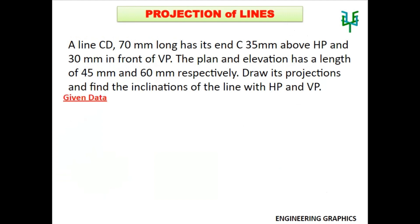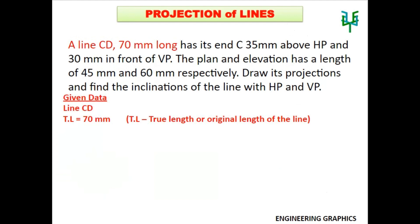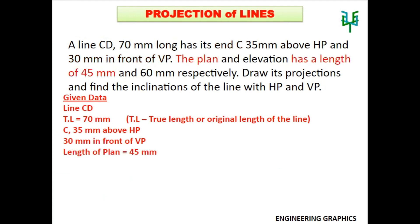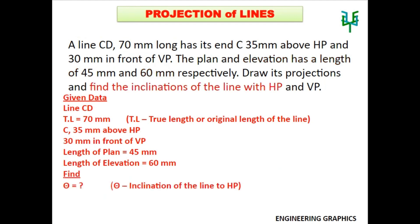The given data are: line is CD, true length of the line is 70mm, point C is 35mm above HP and 30mm in front of VP, length of the plan is 45mm, and length of the elevation is 60mm. After drawing the projections, we are supposed to find angle theta, which is the inclination of the line with HP, and angle phi, which is the inclination of the line with VP.